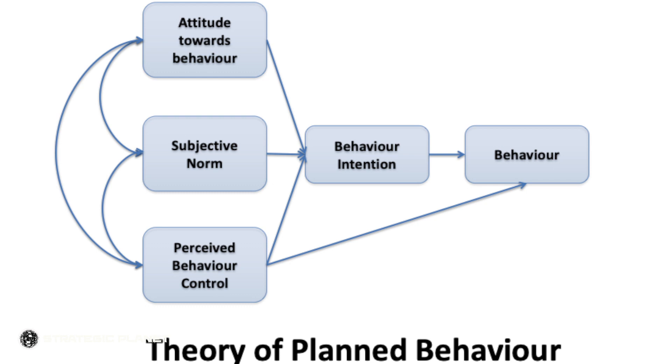The Theory of Planned Behaviour is made up of five elements — five latent variables, five factors, call it what you like. They are made up of attitude, subjective norms, perceived behavioural control, intention, and behaviour. So the questioning that you will ask will be based around those elements.